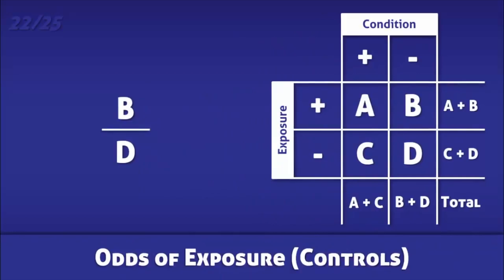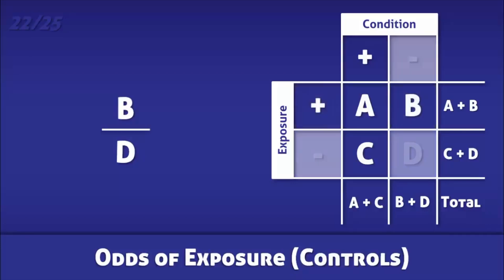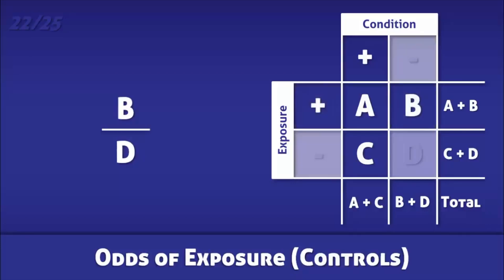The odds of exposure amongst controls is the odds that an individual without a condition was exposed to a particular risk factor. It is calculated by dividing the number of people without a condition who were exposed to the risk factor by the number of people without a condition who were not exposed.